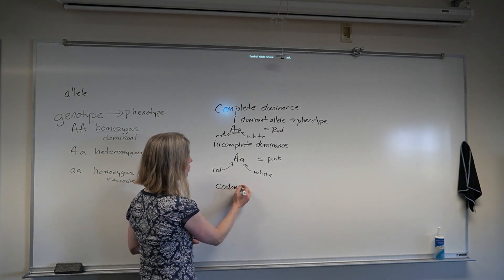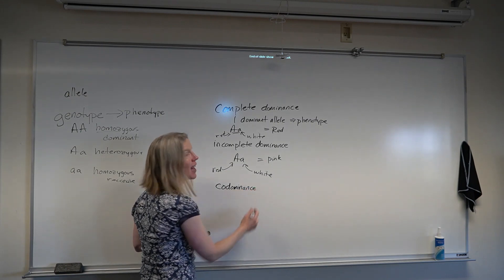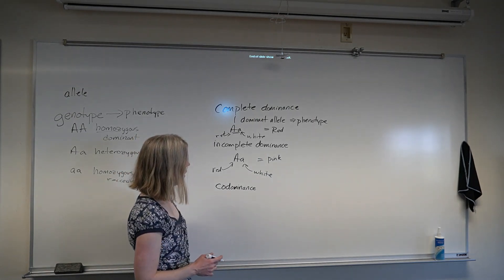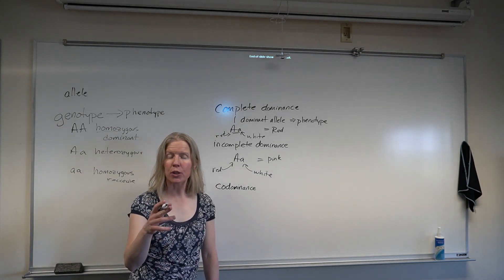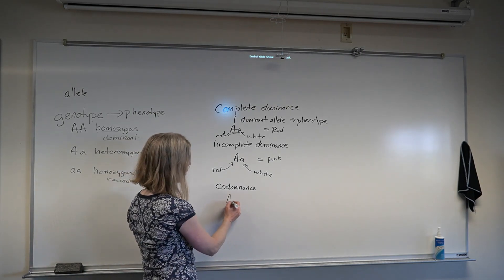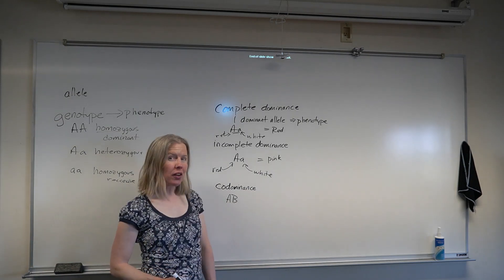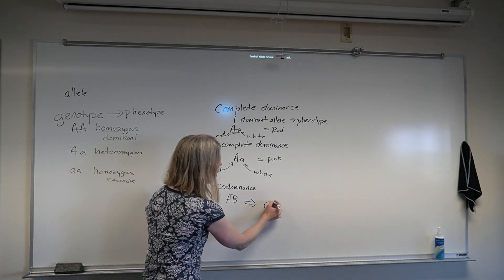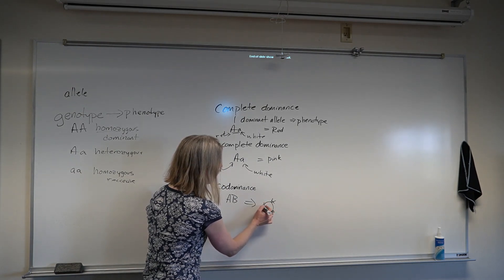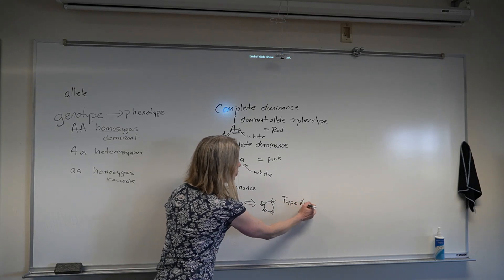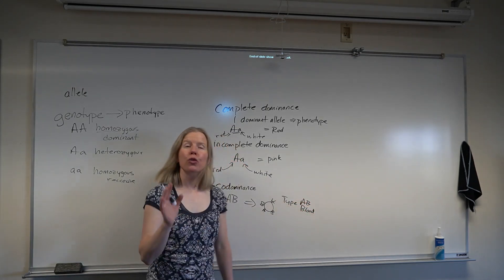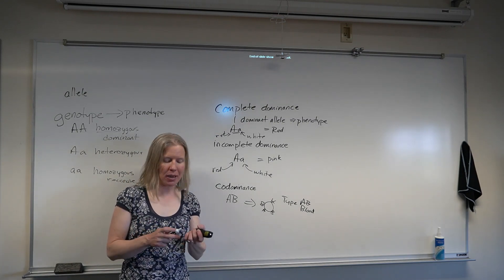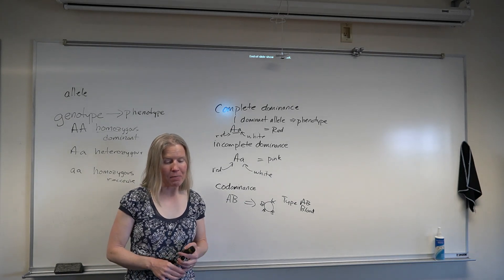In incomplete dominance, which some traits in the human body follow, this is going to give us a pink outcome. And just to make it even more confusing, there are some traits that follow a different pattern called codominance, and codominance means that both traits can show up. The classic example here would be blood type. Type A blood is a dominant trait, type B blood is also a dominant trait, and instead of getting pink, you get both A's and B's on the outside of that red blood cell. You get type AB blood.